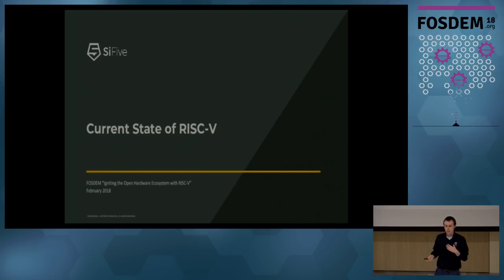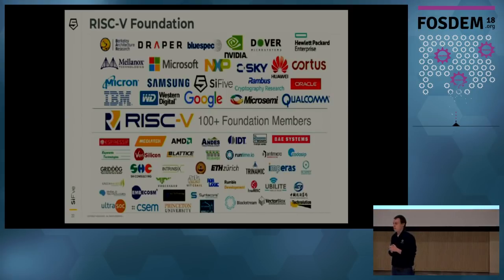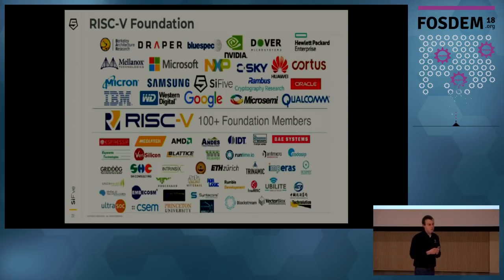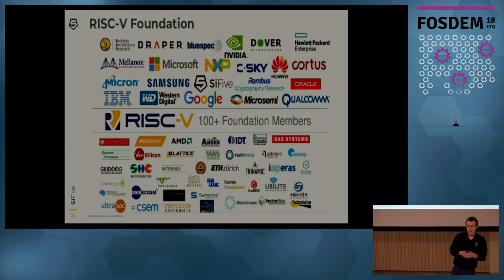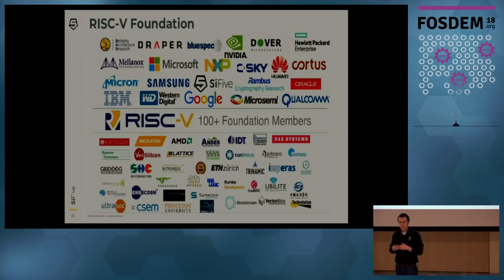Now I'm going to talk about the current state of RISC-V, which is really defined by the RISC-V Foundation. The RISC-V Foundation is a non-profit foundation with over a hundred members, and its charter is to steward the RISC-V ISA — maintaining the ISA specifications, evolving new extensions, and that sort of thing.